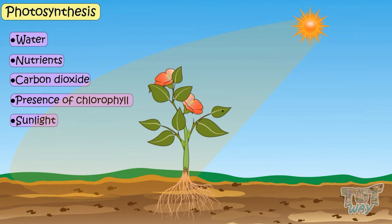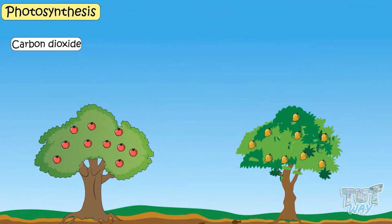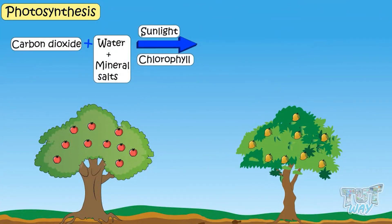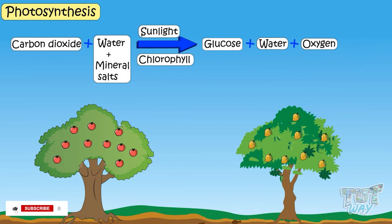The process is written as carbon dioxide plus water and minerals in the presence of sunlight and chlorophyll. It forms glucose, water, and oxygen. This prepared food is stored in various forms, in the form of fruits, in the form of vegetables.